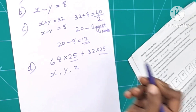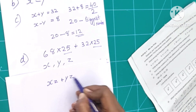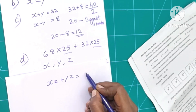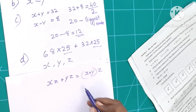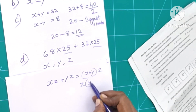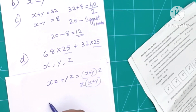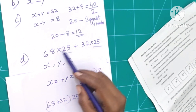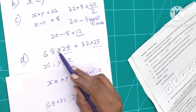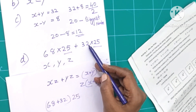Let X equal Z. Then X plus Y. Let's read it as Z. We can write this using the distributive property. 68 plus 32 equals 100, and 100 times 25. The numbers involved are 68 and 32.